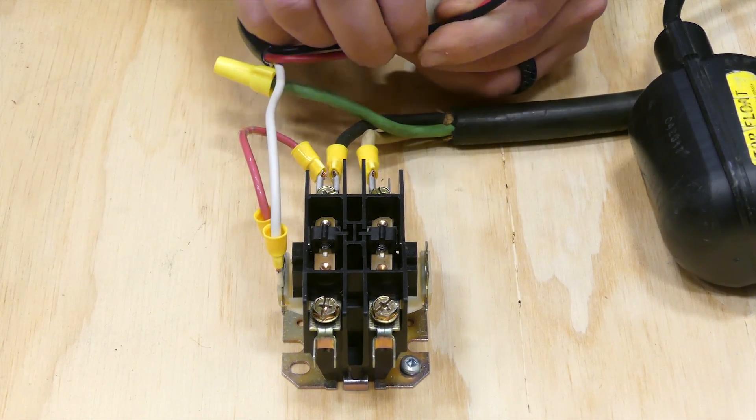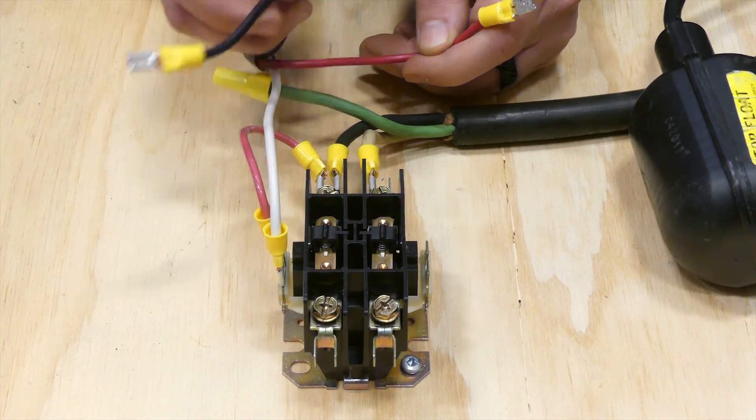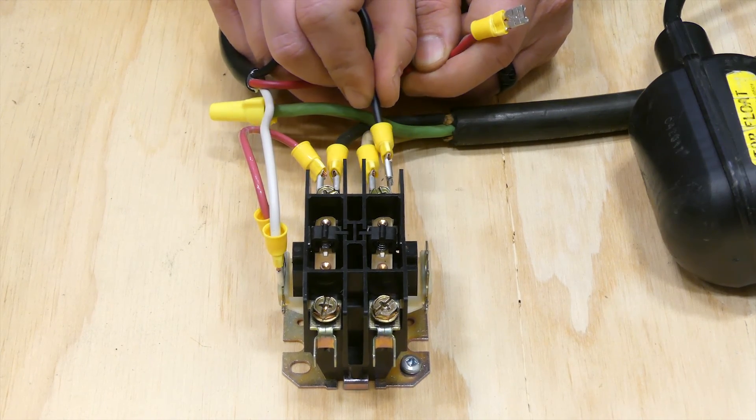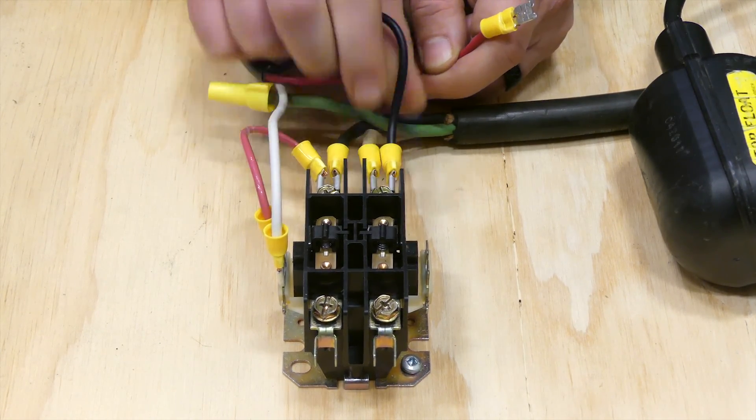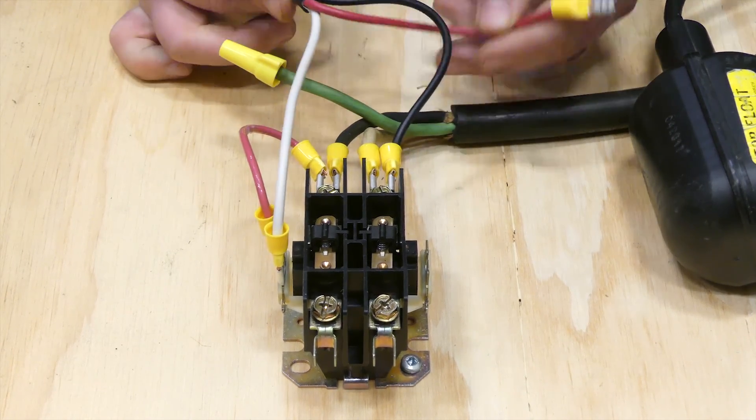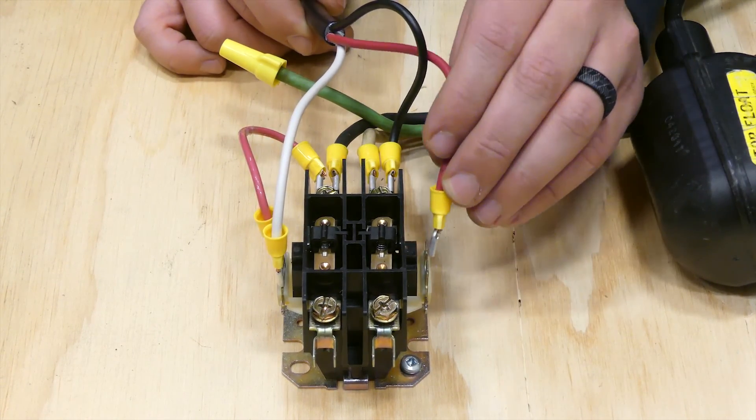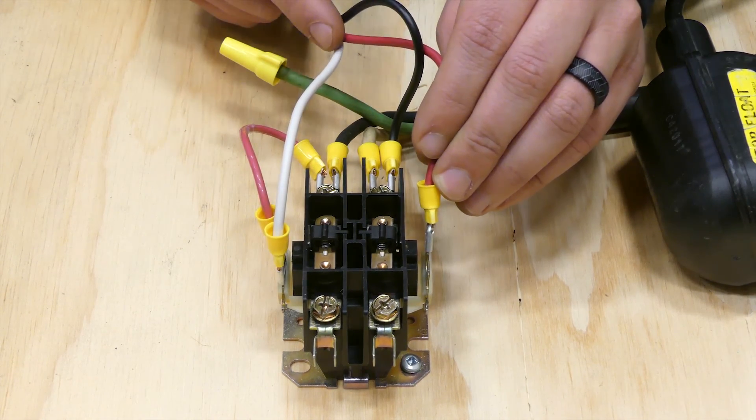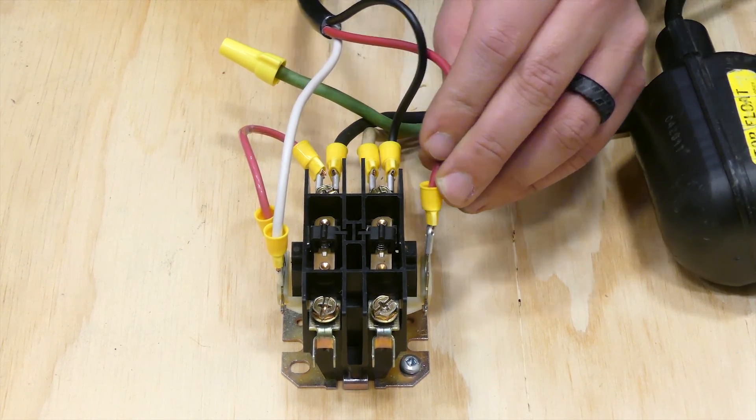We also need to make sure that the black wire is on another spot that is always energized, so right there to share with the incoming power of the system. That leaves the red wire to lead to essentially jumper that power through the black wire, through the float switches, and back to the coil to complete our 220 volt coil circuit.